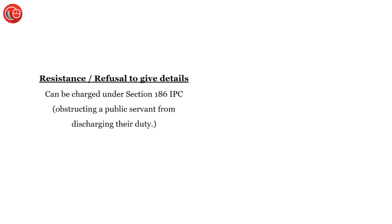Now, if a person who is accused or arrested shows resistance or refuses to give their details, then under Section 186 IPC, a charge can be applied. Section 186 IPC deals with obstructing a public servant in discharge of their public duty.